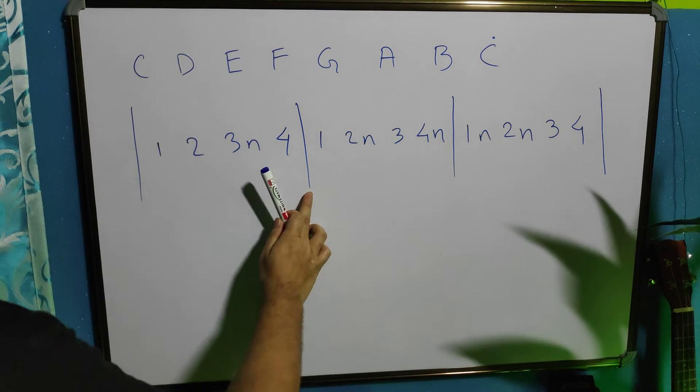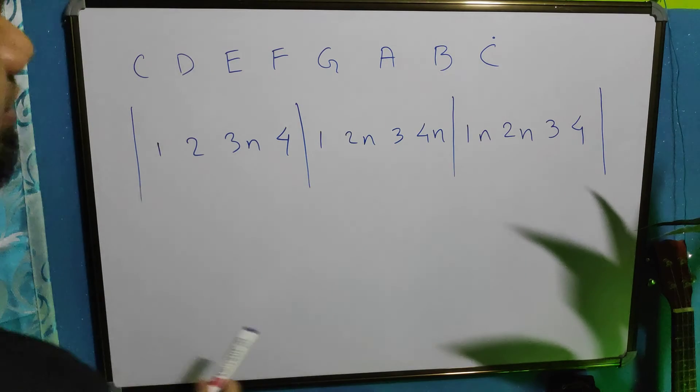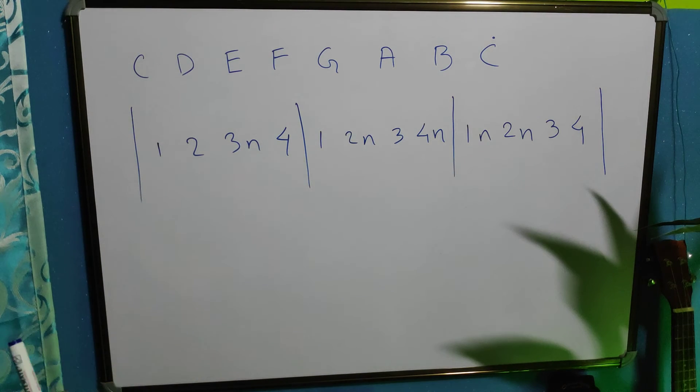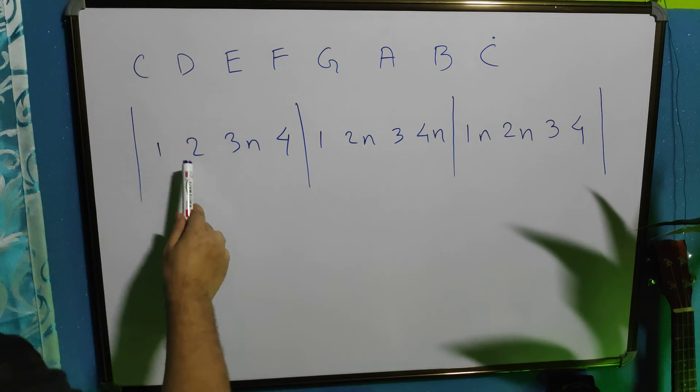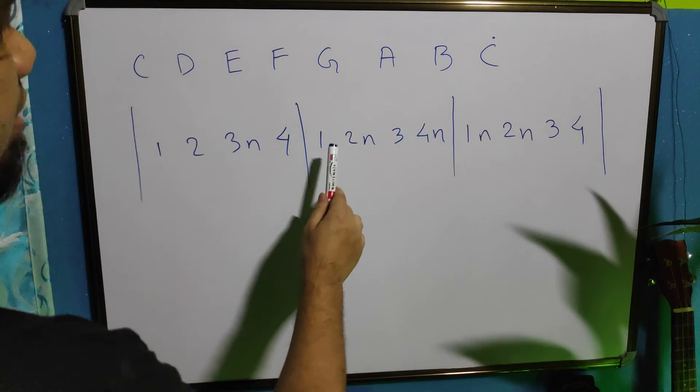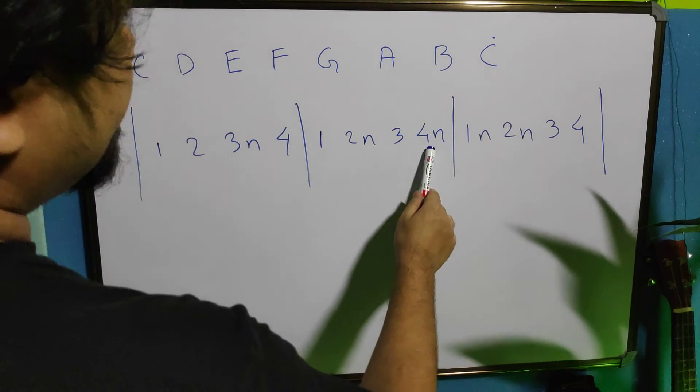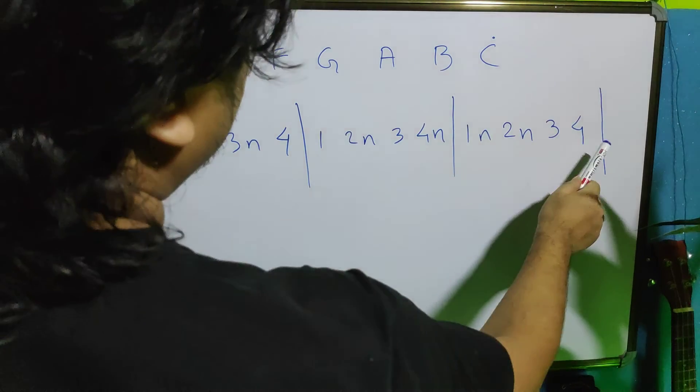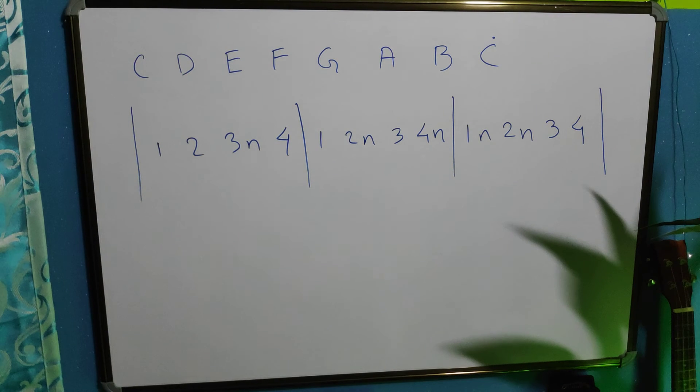So, this is the bar. First bar, second bar, third bar. It is a 3 bar line. 1, 2, 3 and 4. 1, 2 and 3, 4 and. 1 and 2 and 3, 4. It is a very simple rhythm pattern.